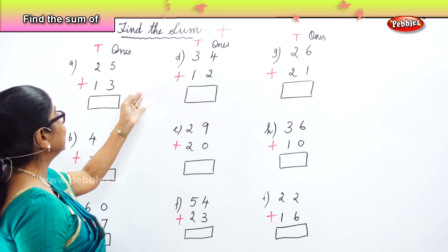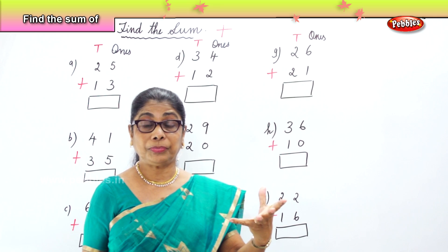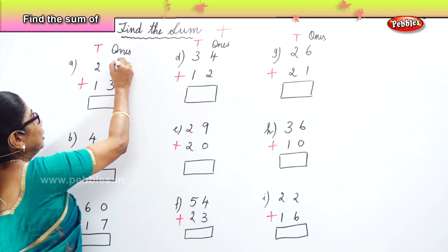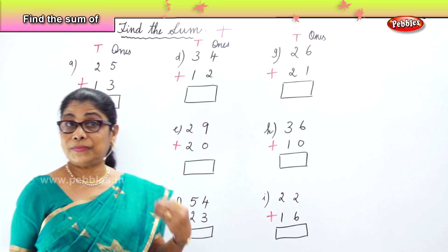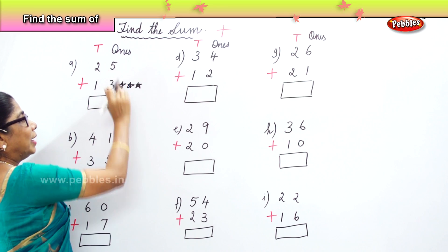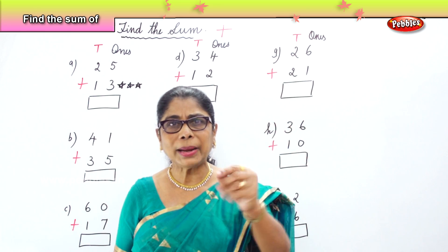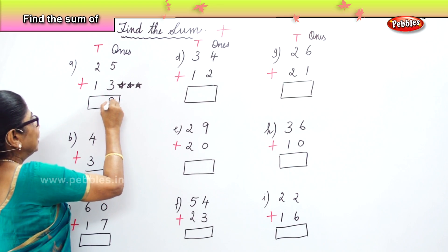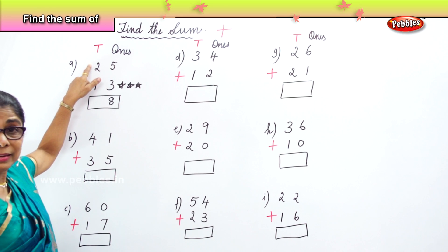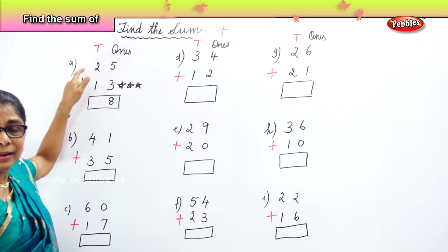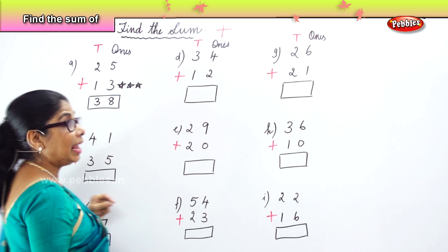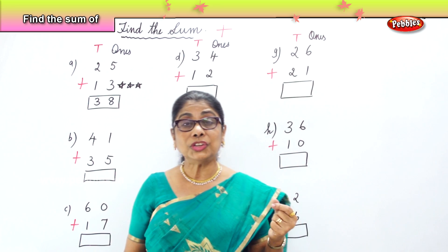First set of numbers: twenty-five plus thirteen. Find the sum of twenty-five and thirteen. Let's take the ones — you have five ones and three ones. Five plus three? Eight. Very good. So you have eight ones. Now look at the tens place: you have two tens and one ten. Two plus one? Three tens. Very good. So you have thirty-eight. When you find the sum of twenty-five and thirteen, you get thirty-eight.